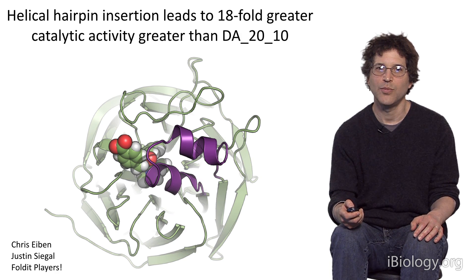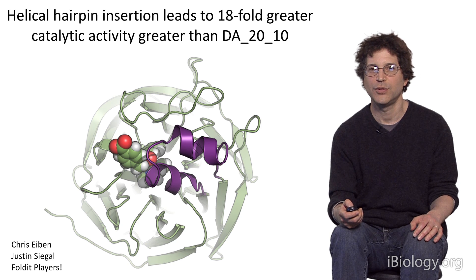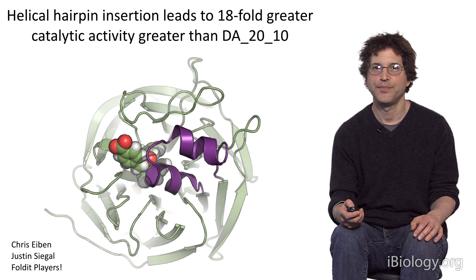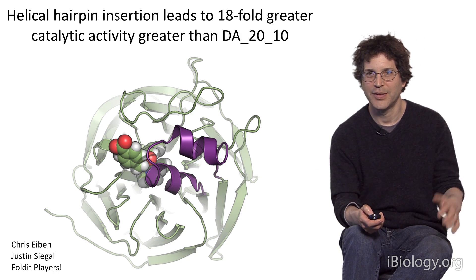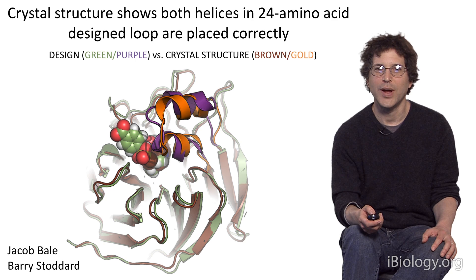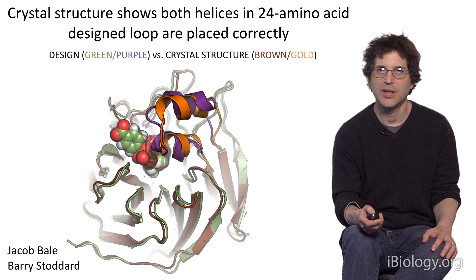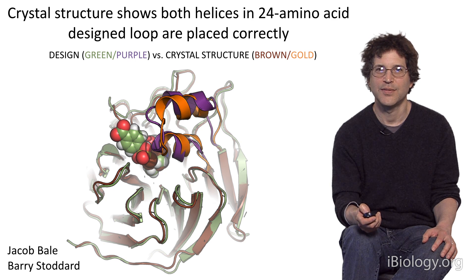When we made this protein in the lab, it actually catalyzed the reaction 20-fold more rapidly than the starting design. Foldit players had figured out how to improve the design we had made on the computer. When the crystal structure was solved in Barry Stoddard's lab, it turned out the protein really folded up the way they predicted. The design is in purple — what the Foldit players came up with — and the crystal structure is in gold, and they're very, very close.